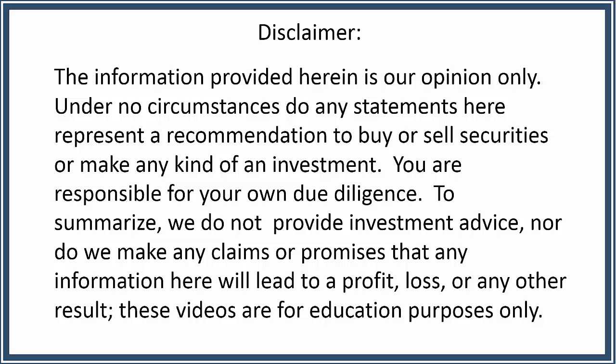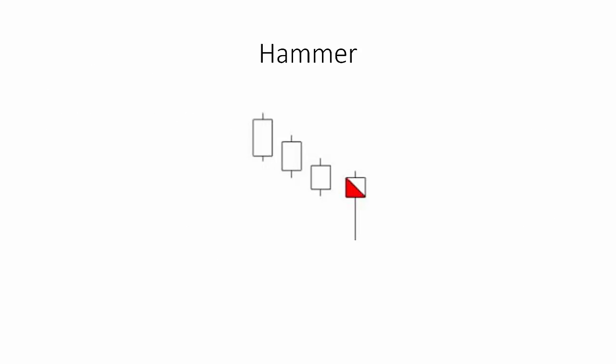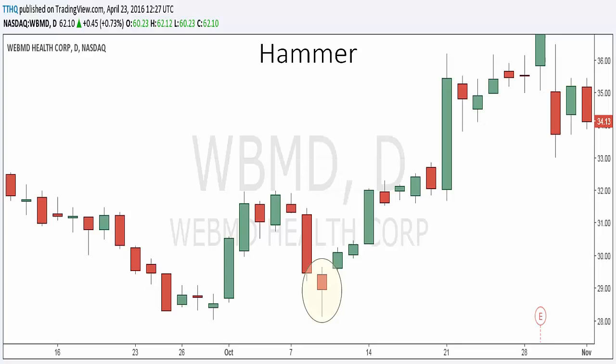The hammer formation is created when the open, the high, and the close are roughly the same price, and there is a longer lower shadow which is typically twice the length of the real body. When the high and the close are the same, a bullish hammer candlestick is formed, and it is considered a stronger formation because the bulls were able to reject the bears completely and push the price even more past the opening price. On the other hand, when the open and the high are the same, this hammer formation is considered less bullish.